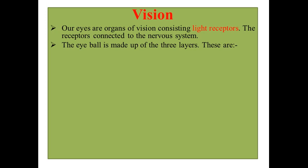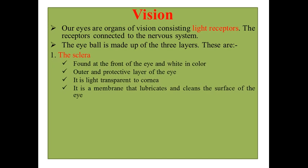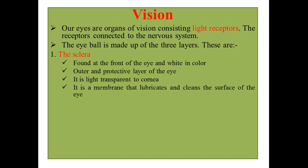Let's see the eyeball. Our eyeball is made up of three layers: sclera, choroid, and retina. The first one is the sclera, which is the outer and protective layer of our eye. We can find the sclera at the front of the eye, and it is white in color and transparent to light.